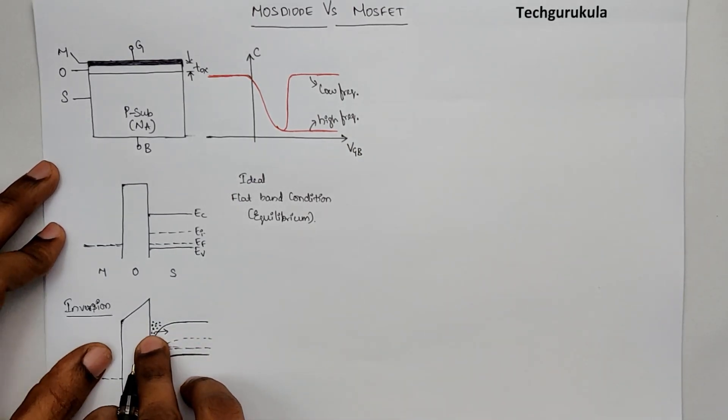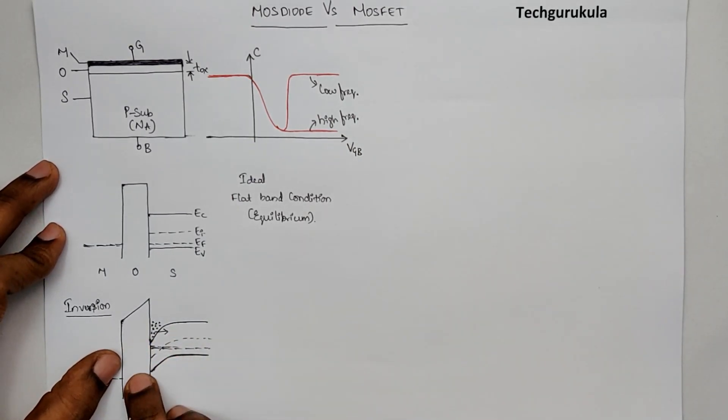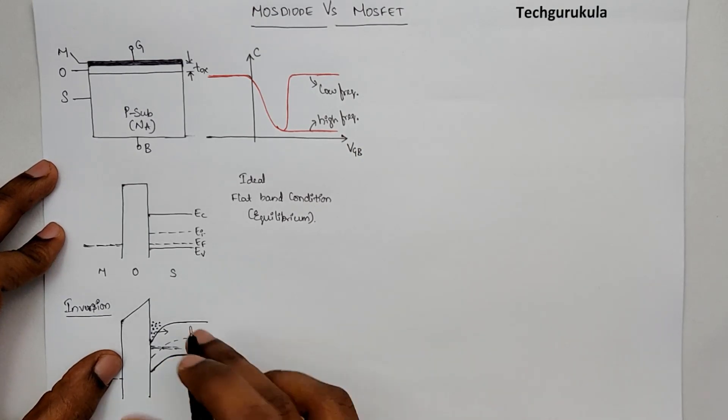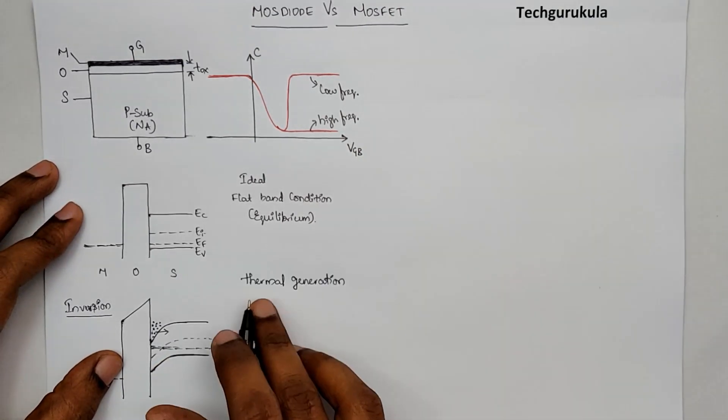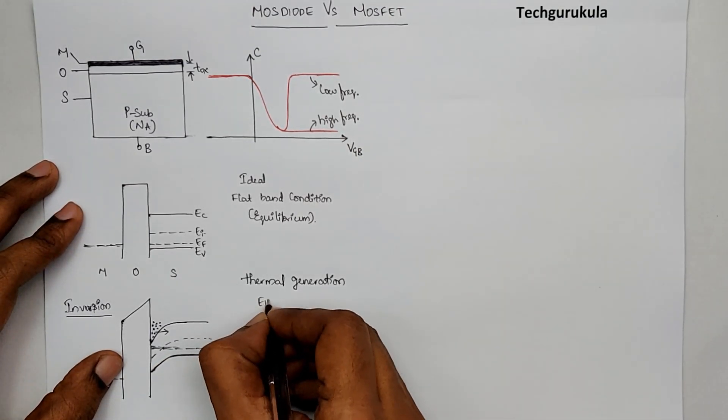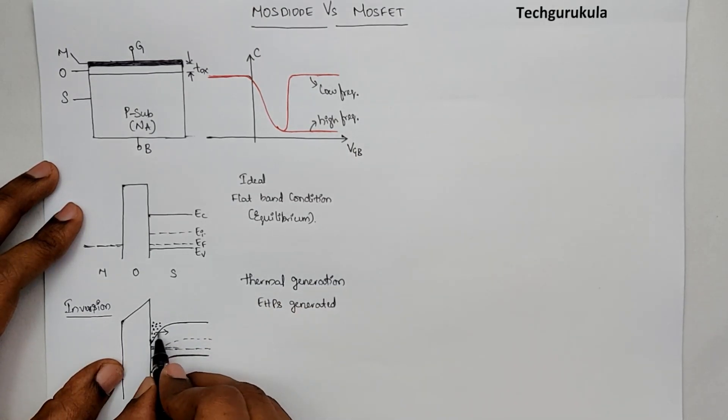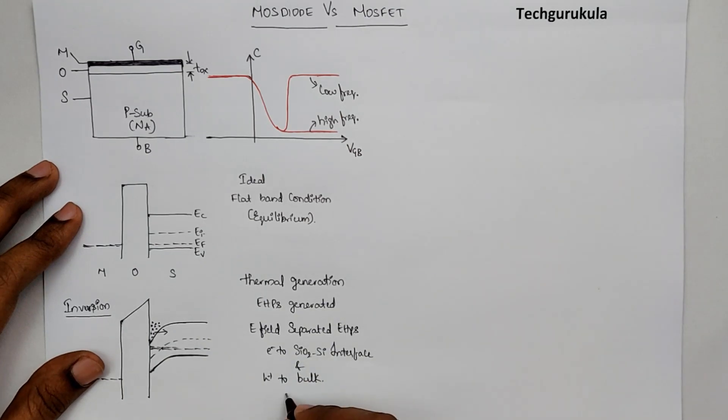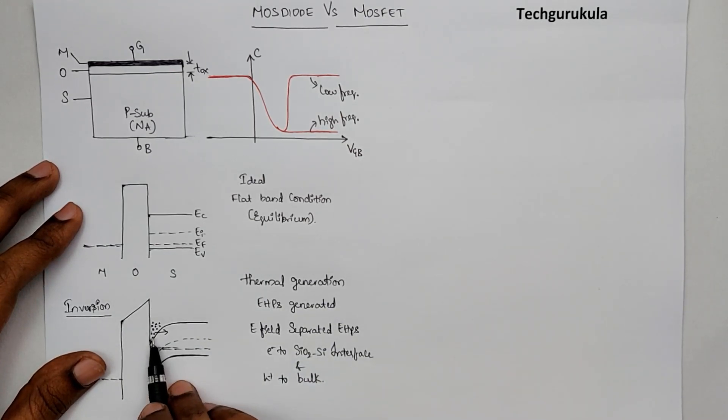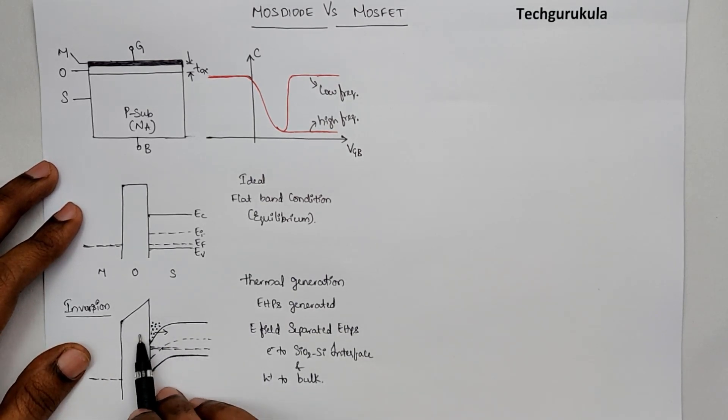Here, we got the inversion charge in equilibrium because of thermal generation, due to which there were electron hole pairs generated, and the present electric field separated the electrons and holes. Electrons were pulled towards the silicon dioxide-silicon interface. And under equilibrium, the N times P was equal to Ni squared reached. Once that happens, it reaches equilibrium. Then we had the inversion charge.